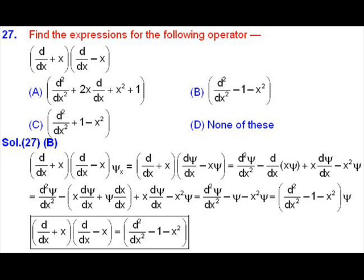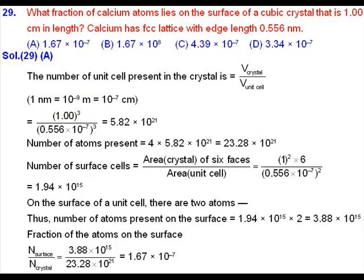Taking ψ out as common, the expression becomes (d²/dx² − 1 − x²)·ψ. Removing the ψ function that we applied just to expand the expression, our final expression for the operator will be d²/dx² − 1 − x².